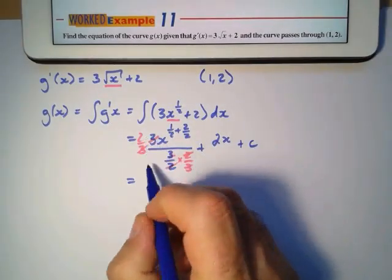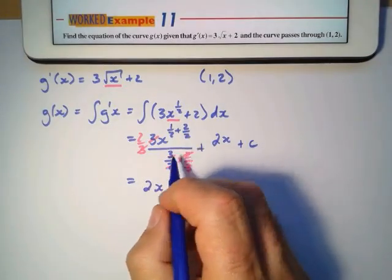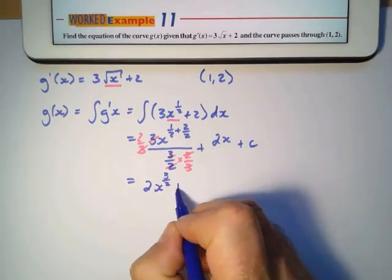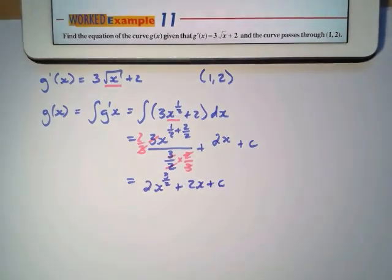That gives us now a new equation. It's going to give us 2x to the power 3 over 2 plus 2x plus C.